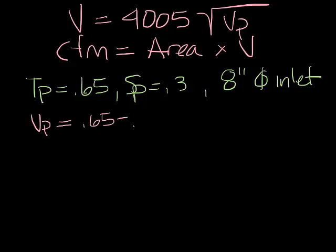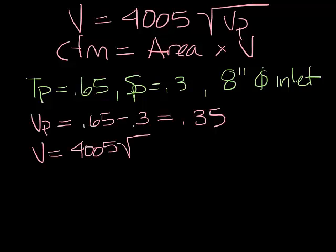So you know the velocity pressure is 0.65 minus 0.3, which is 0.35. So the velocity is 4005 times the square root of the velocity pressure. Now if you work that out, you come up with a velocity of 2369 feet per minute.